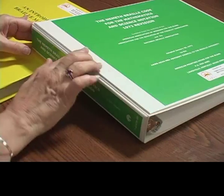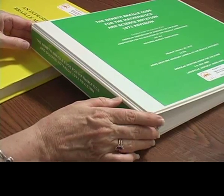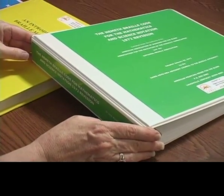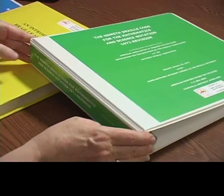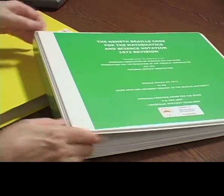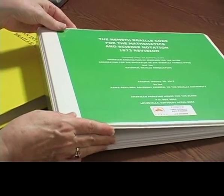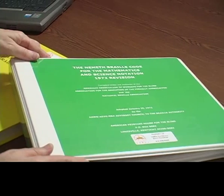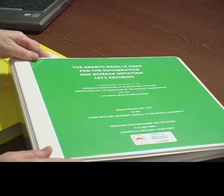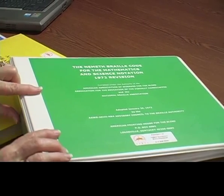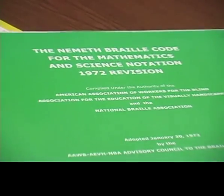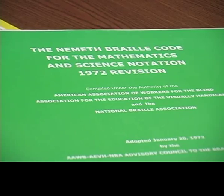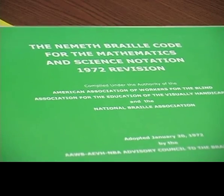This one has some white on it, but most of the older versions are completely green. I'm going to go ahead and open it up for you to see a little better. This is the official Braille Code — the print version available from the American Printing House for the Blind.